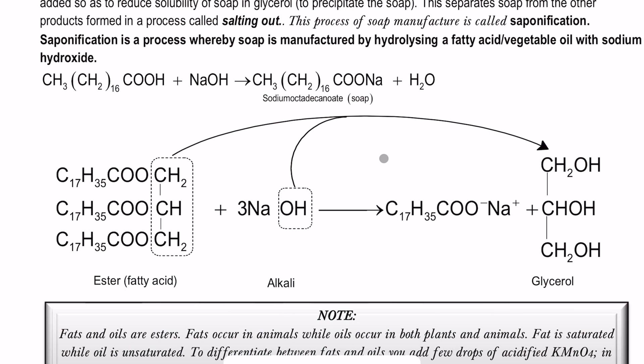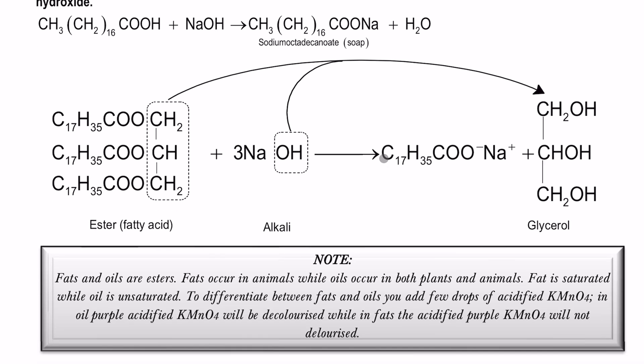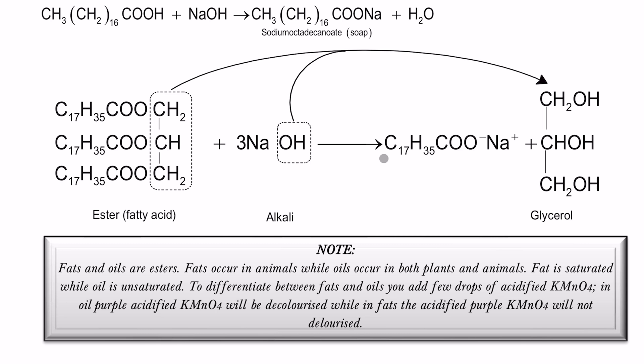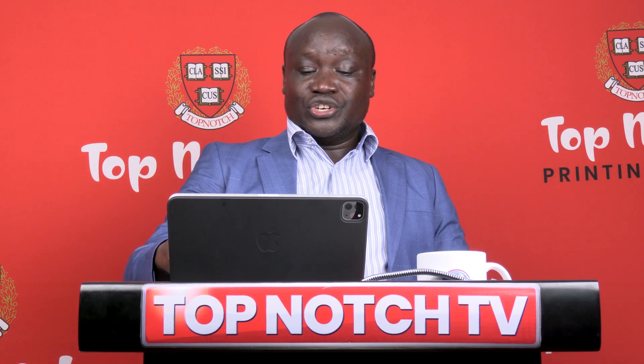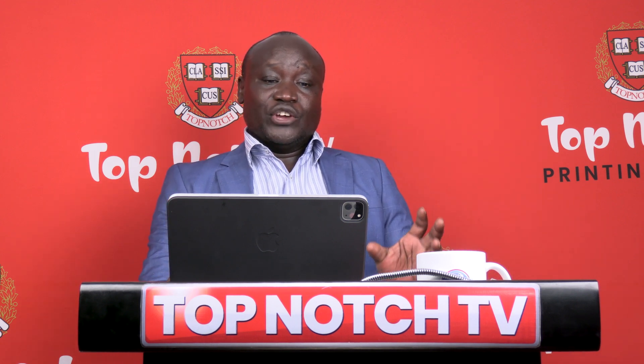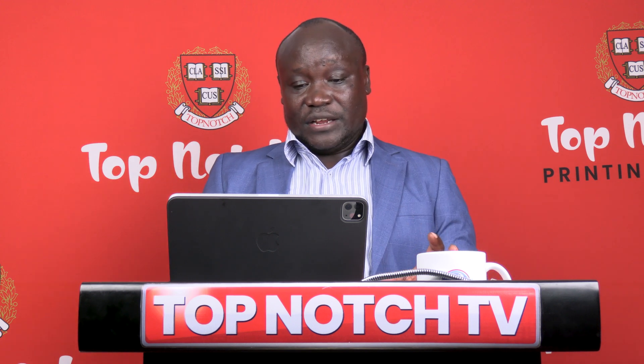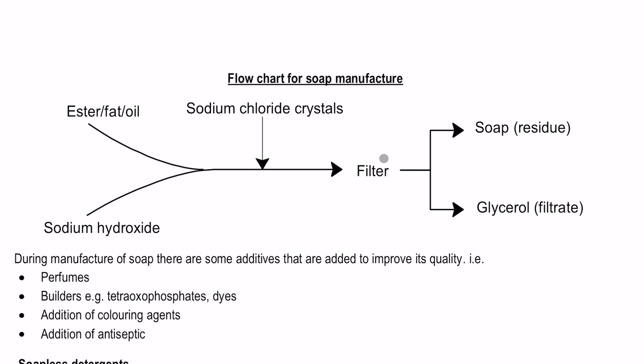The process by which soap is formed is called saponification, and it can also be referred to as ester hydrolysis. Here is a simple flowchart that summarizes the process: you take sodium hydroxide, mix it with fat or oil, then heat it. As you are heating, add sodium chloride. After adding sodium chloride, do the filtration — soap is at the top, glycerol is at the bottom. You get soap as the residue and glycerol as the filtrate.